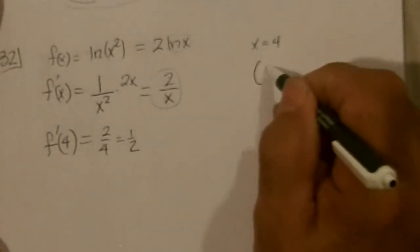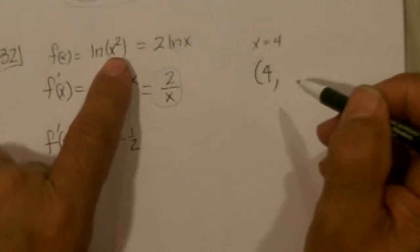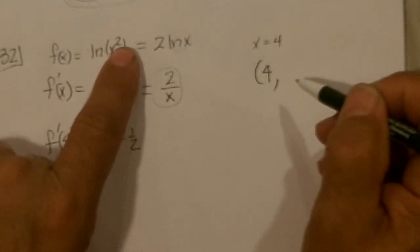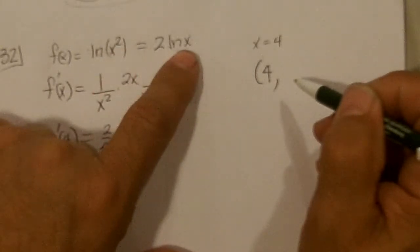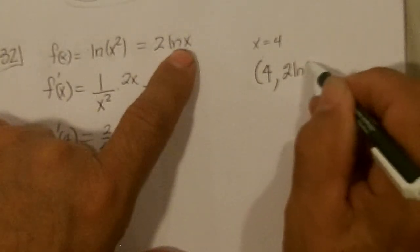And our point, we put 4 into the original equation. 4 squared, or 2 times the ln of 4. We could just use that. So that would be 2 times the ln of 4.